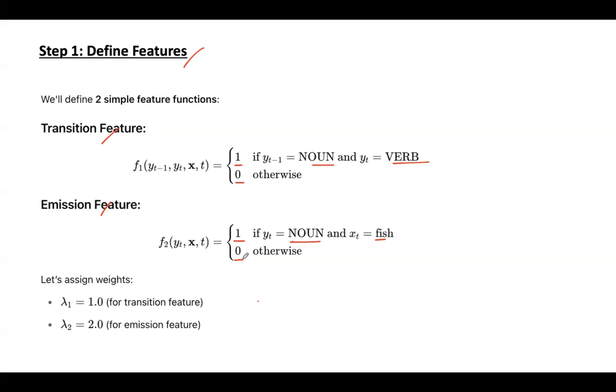These are two simple feature functions useful for matching words with their likely tags. We are assigning weights: lambda 1 equal to 1.0, lambda 2 equal to 2.0. They are assigned randomly. In fact, these weights are learned during training and determine how important the feature is in the final scoring. The emission feature is more important so the value assigned is 2.0, whereas the transition feature is less important so the weight assigned is 1.0.